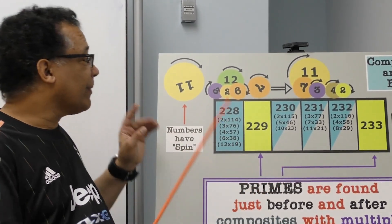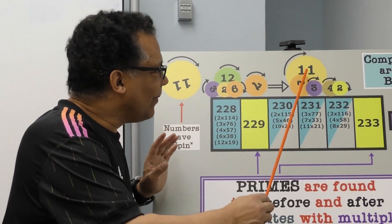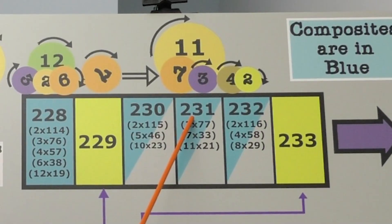What do we mean by the spin? Well, let's see. 11 is spinning. Where does it wind up? It winds up at 231.